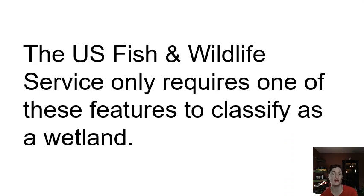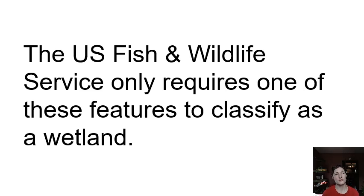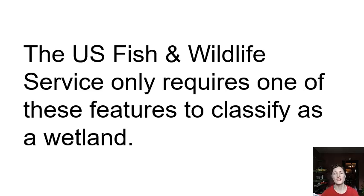The US Fish and Wildlife Service only requires one of these three features to classify a site as a wetland, which is pretty useful. If hydric soil is present — even if plants have been removed or invasive species have replaced the plant community — you might not be able to tell by the plants that an area was previously a wetland. But the soils might have that clay coloring, rust coloring, or cracking and high clay content to show that the area once was a wetland. So you can protect it and restore it to be a wetland again, which reflects our changing views of what a wetland is and how we protect them.